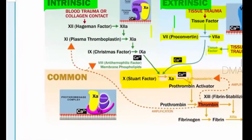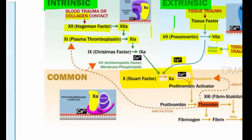In the intrinsic mechanism, once the tissue is damaged, the collagen present in the extracellular matrix is exposed. This is recognized by the Hageman factor (Factor 12), which becomes activated. Activated Factor 12A further activates plasma thromboplastin antecedent — that is Factor 11 — into its activated form. This activates Factor 9, the Christmas factor, into its activated form. Along with this, Factor 8 also comes and joins.